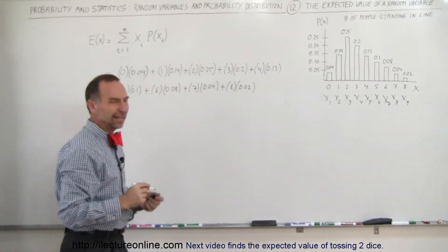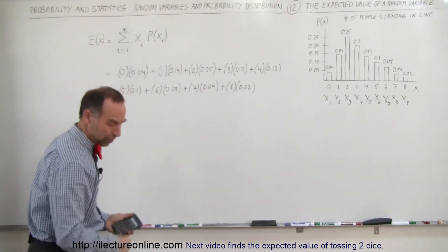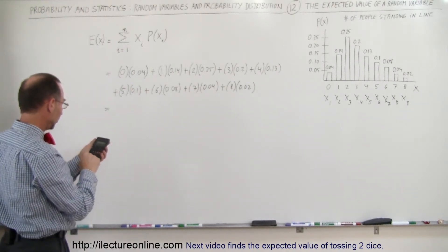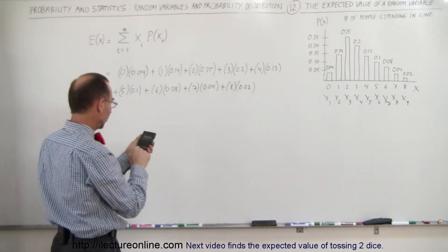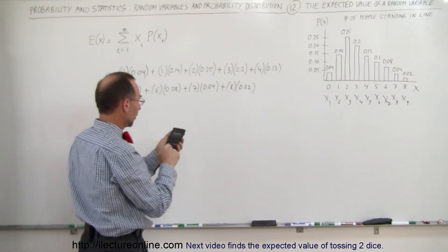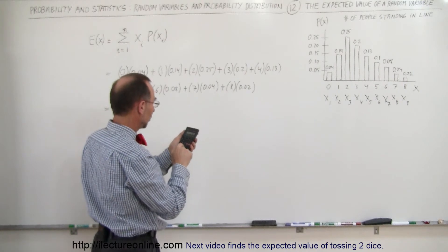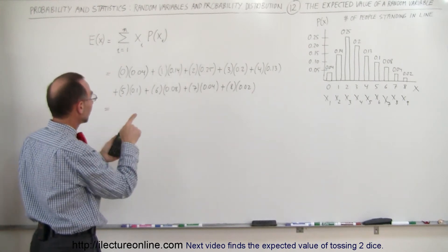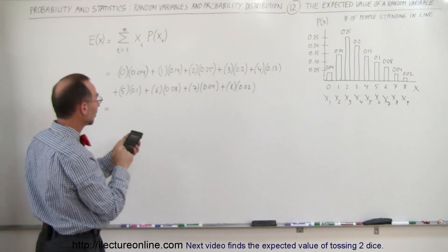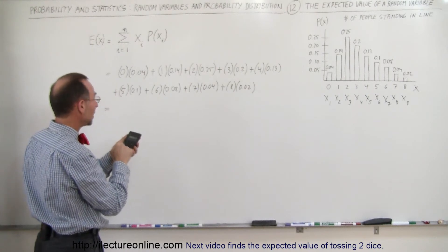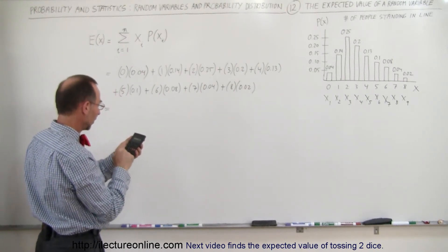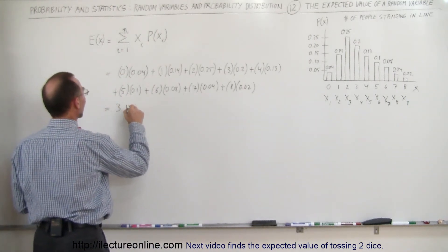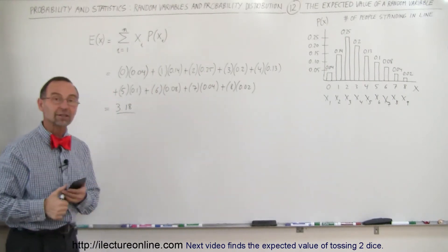Now we need a calculator because that's a little too much to do in your head. So we get: 0 + 0.14 + 0.50 + 0.60 + 0.52 + 0.50 + 0.48 + 0.28 + 0.32. That adds up to — if I didn't make any mistakes pushing buttons — 3.18 as the expected value.